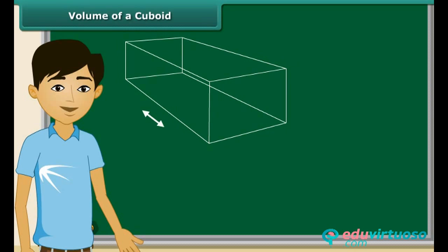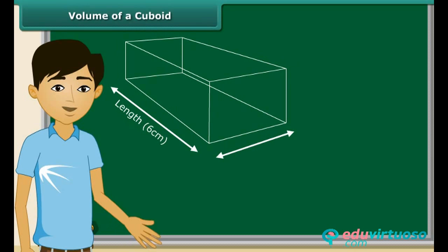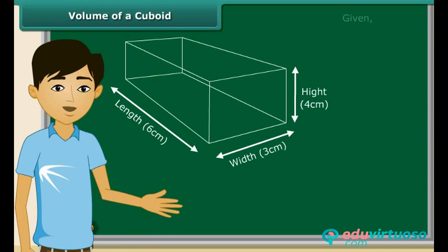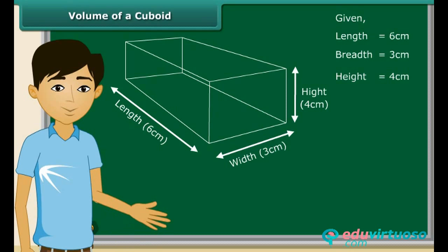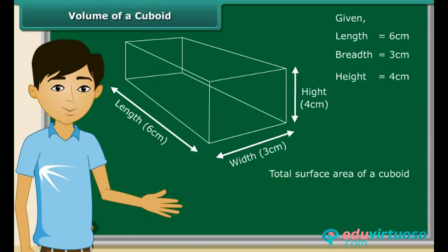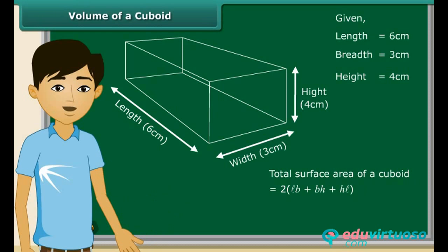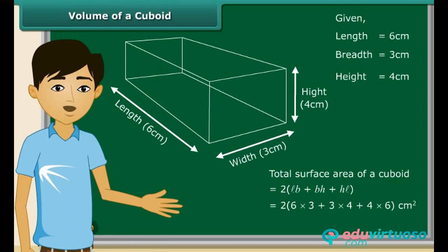All right, let us take an example. This cuboid has length equal to 6 centimeters, breadth equal to 3 centimeters, and height equal to 4 centimeters. Calculating its surface area is not difficult. Substituting all the values into the formula gives us the surface area of this cuboid, which is equal to 108 square centimeters.